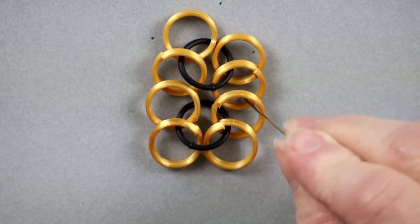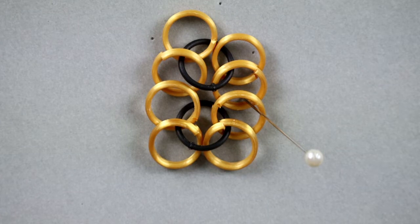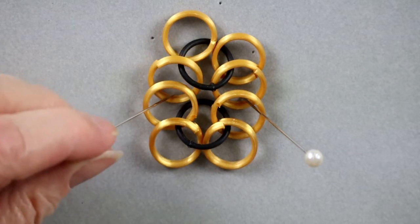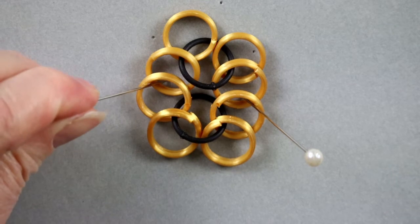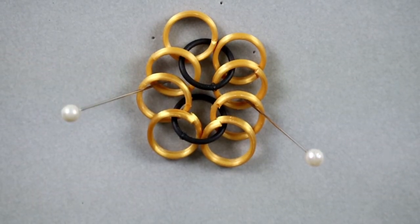I will mark the spots where the 2 units of gold rings overlap with pins. I usually work on a foam core board or cork board so I can put pins in it to keep the pattern organized.